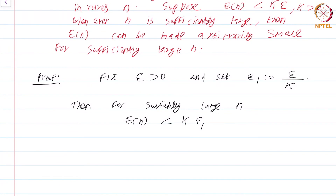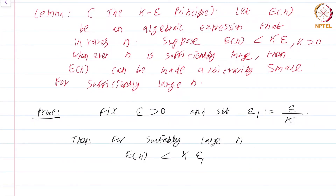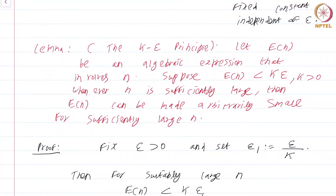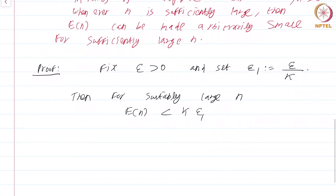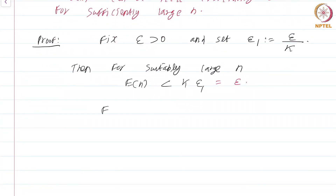What we have done is chosen that epsilon to be epsilon_1. So, for each epsilon greater than 0, E of n is less than k·epsilon for k greater than 0 whenever n is sufficiently large. In particular, you can do it for the choice of epsilon equal to epsilon_1. So E of n can be made less than k·epsilon_1 for suitably large n — but k·epsilon_1 is just k·(epsilon/K), which equals epsilon. What this is saying in the end is that E of n can be made less than epsilon for suitably large n. This just says that E of n can be made arbitrarily small.